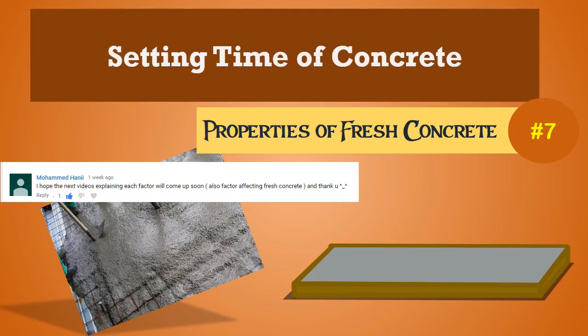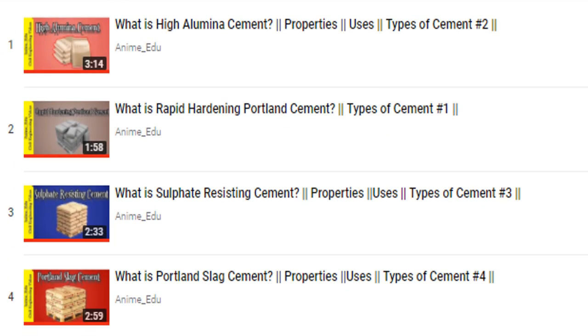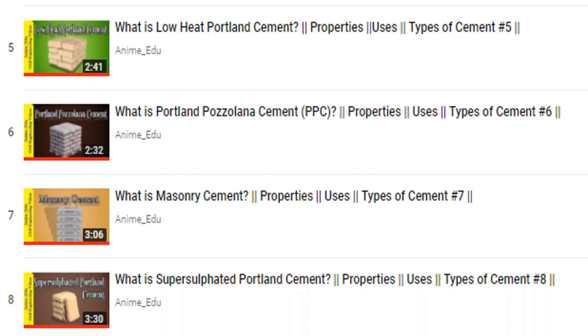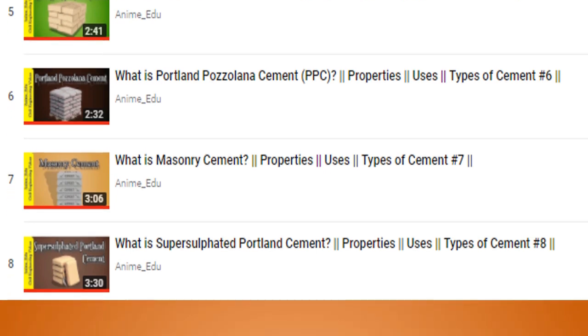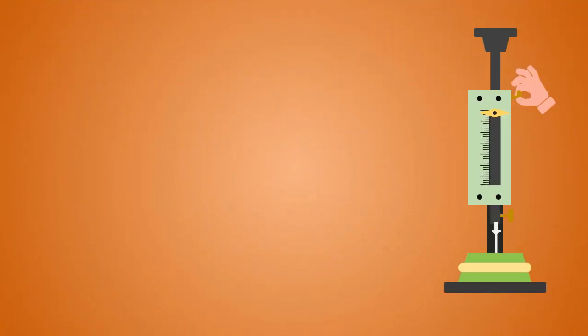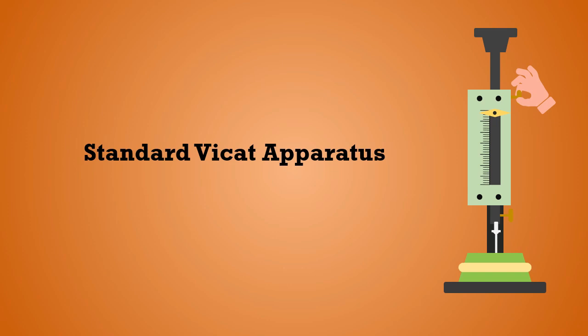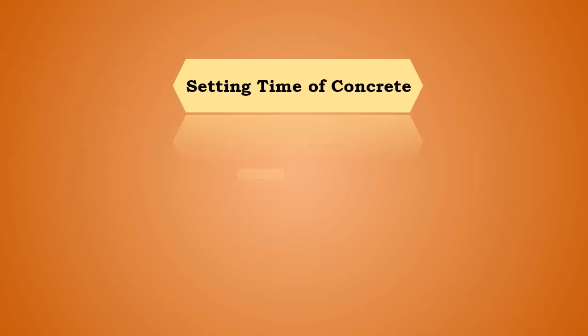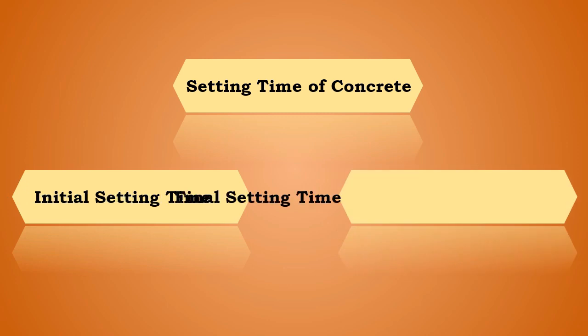Setting time of concrete. In the series on types of cement, we have seen the setting time of cement for various types of cement. The setting time of cement is calculated by a standard Vicat apparatus in laboratory conditions. In general, setting time is of two types: namely initial setting time and final setting time.